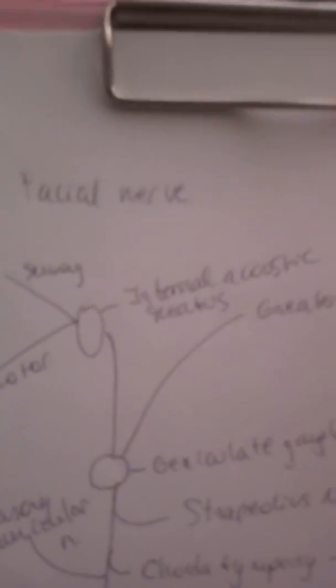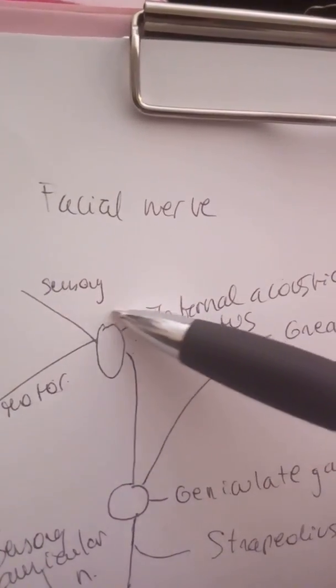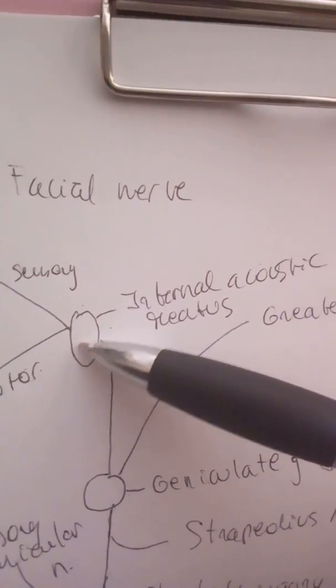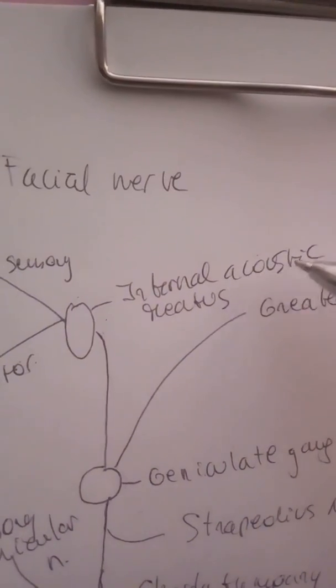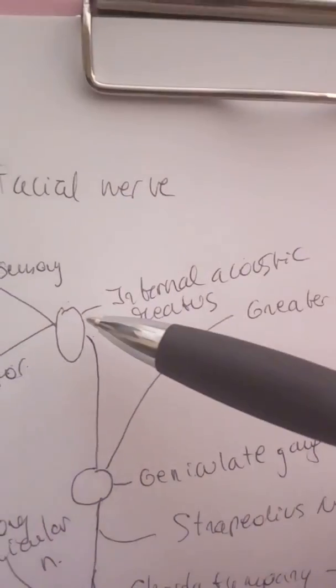Today about the facial nerve. Facial nerve has a small sensory root and a large motor root that will cross the internal acoustic meatus with the vestibulocochlear nerve.